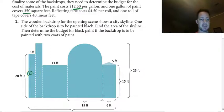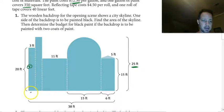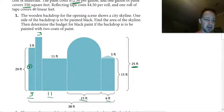For the next one, the height is 25. We have to subtract: this piece is 3, this piece is 11, so 38 minus all of these gives us 3 feet remaining. So 3 times 25 is 75 square feet.